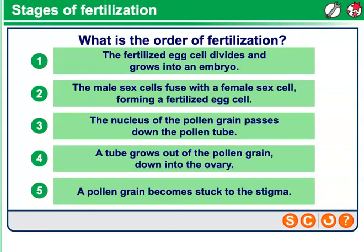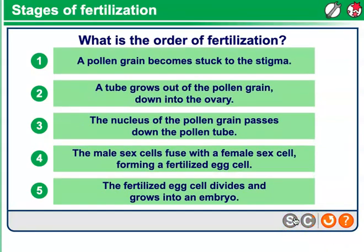So what is the order of fertilization? First, the pollen grain becomes stuck to the stigma. Second, a tube grows out of the pollen grain down into the ovary. Third, the nucleus of the pollen grain passes down the pollen tube. Fourth, the male sex cell fuses with the female sex cell, forming a fertilized egg cell. And fifth, the fertilized egg cell divides and grows into an embryo.